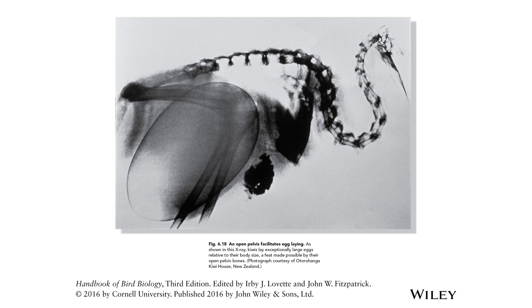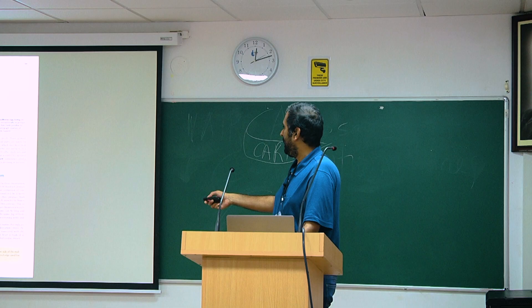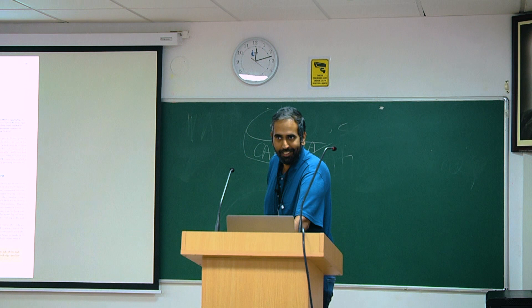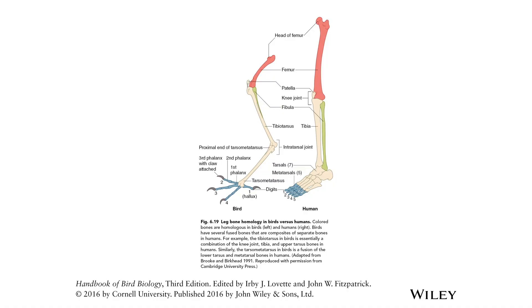The bird foot too has bone fusion. Instead of a carpometacarpus, you've got a tarsometatarsus — it's all the same thing. Names notwithstanding, there are a bunch of bones that fuse together. You've got fusion in the arms, fusion in the legs, and all of those are driven to accommodate the posture of bird legs for their cursorial type of locomotion.